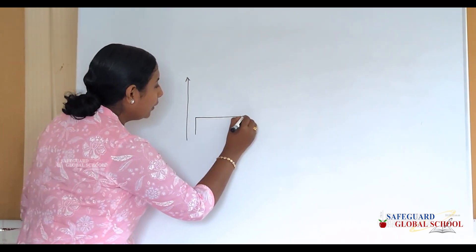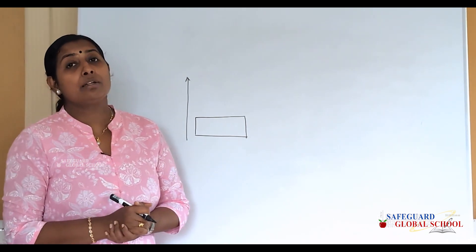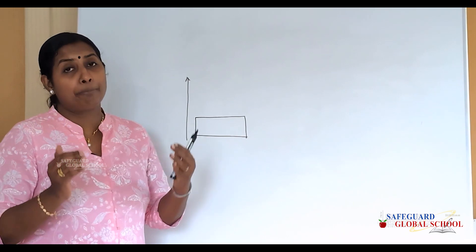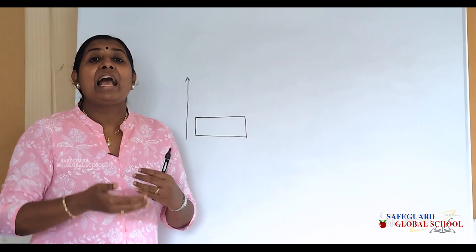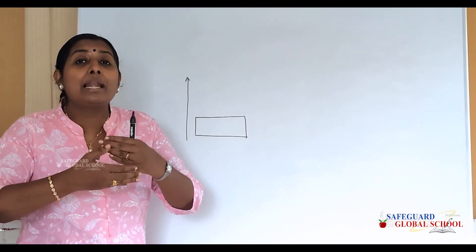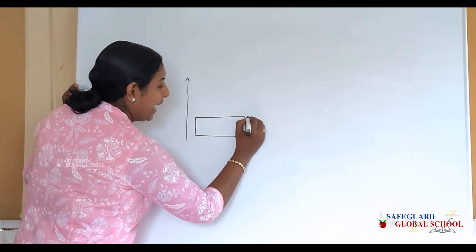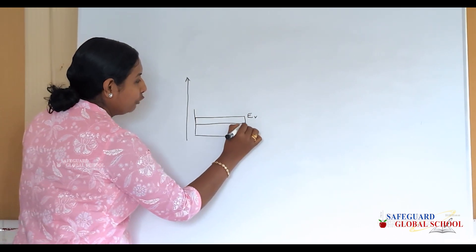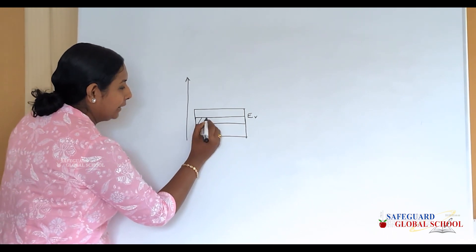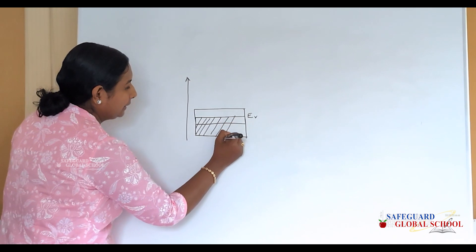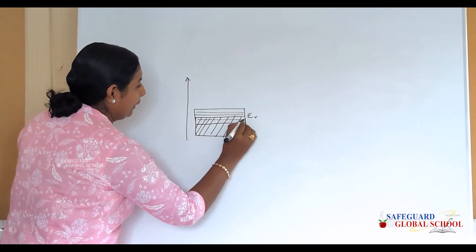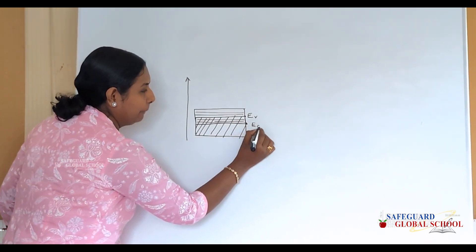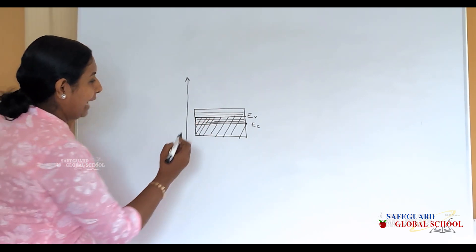For metals, at ordinary temperatures they are good conductors of electricity, so there is no need for an electron to jump from the valence band to the conduction band — they are already conducting. In the case of metals, the valence band and conduction band coincide or overlap. You can shade the valence band and conduction band such that there is an overlapping area where the higher level of the valence band lies above the lower level of the conduction band.